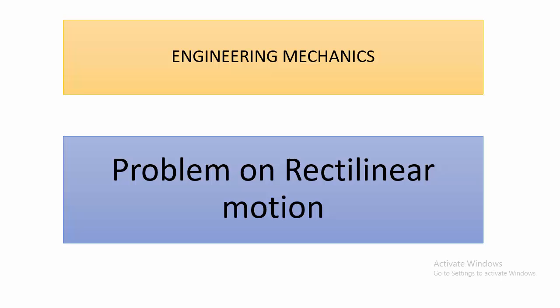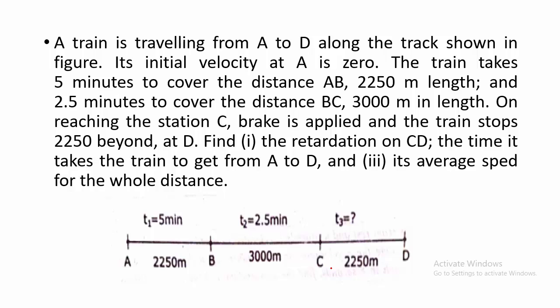Dear students, in this lecture video we are going to solve a problem on rectilinear motion. A train is traveling from A to D along the track as shown in the figure. The train's initial velocity at point A is 0. The train takes 5 minutes to cover distance AB of 2250 meters, and 2.5 minutes to cover distance BC of 3000 meters. On reaching station C, brakes are applied and the train stops 2250 meters beyond at point D. Find the retardation on CD, the time it takes the train to get from A to D, and its average speed for the whole distance.